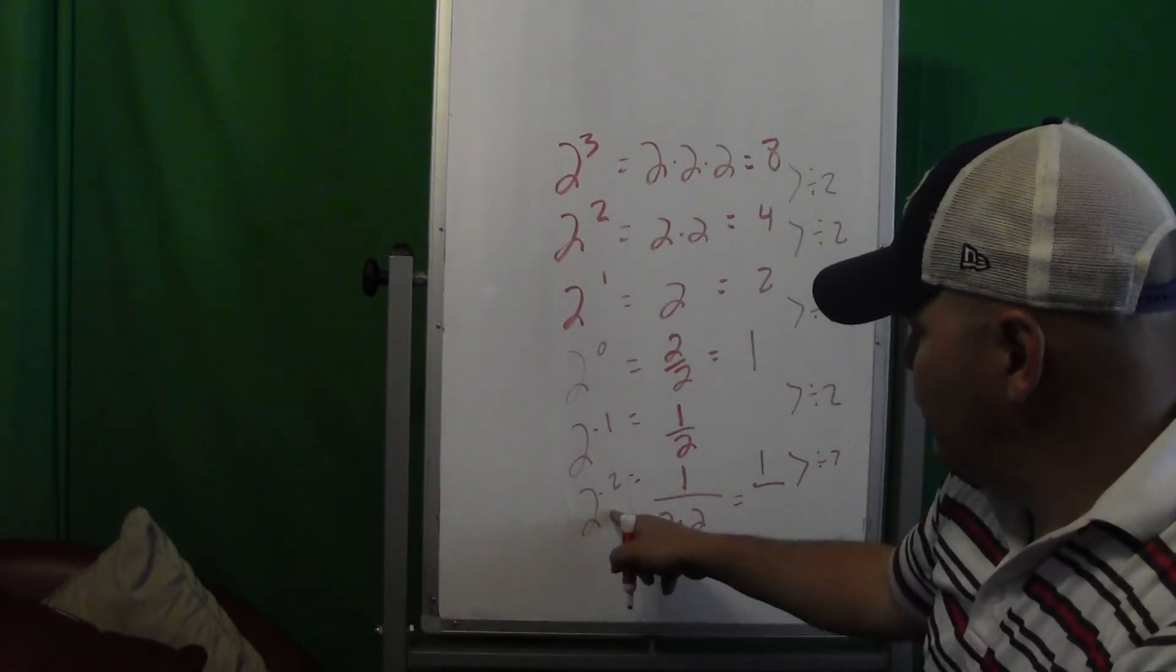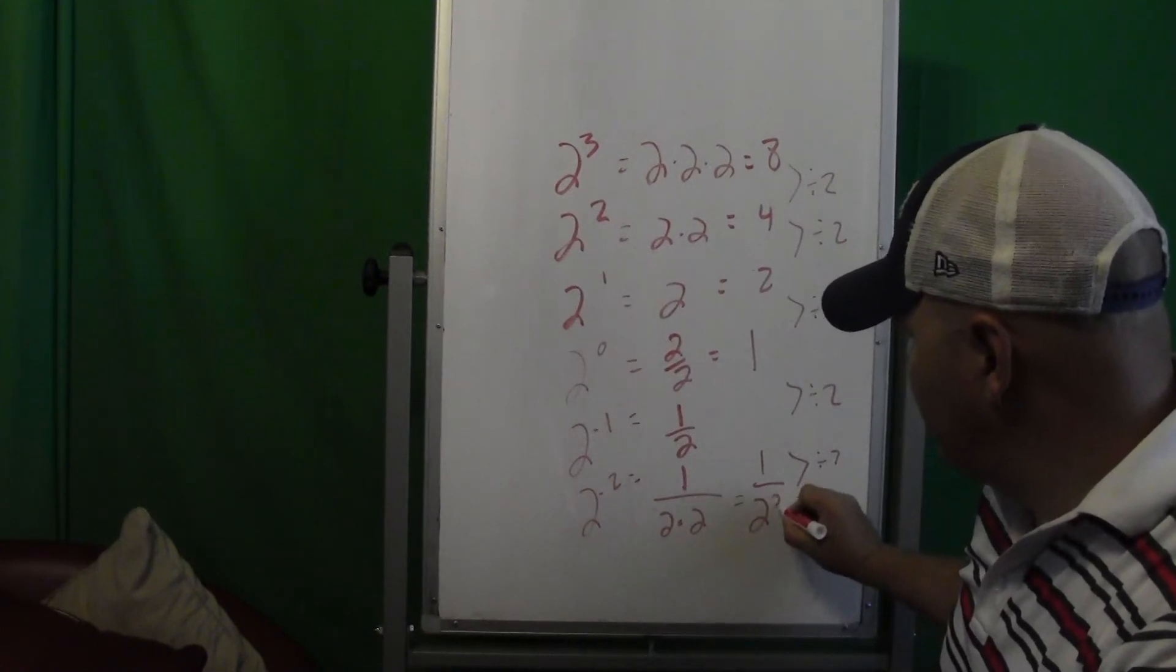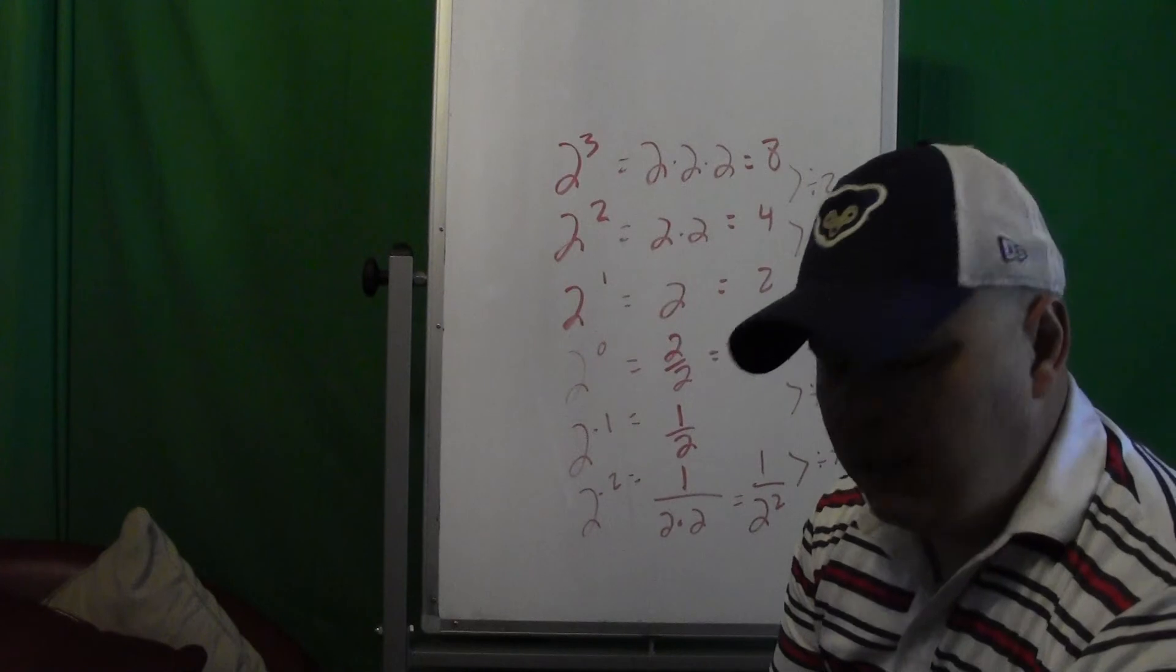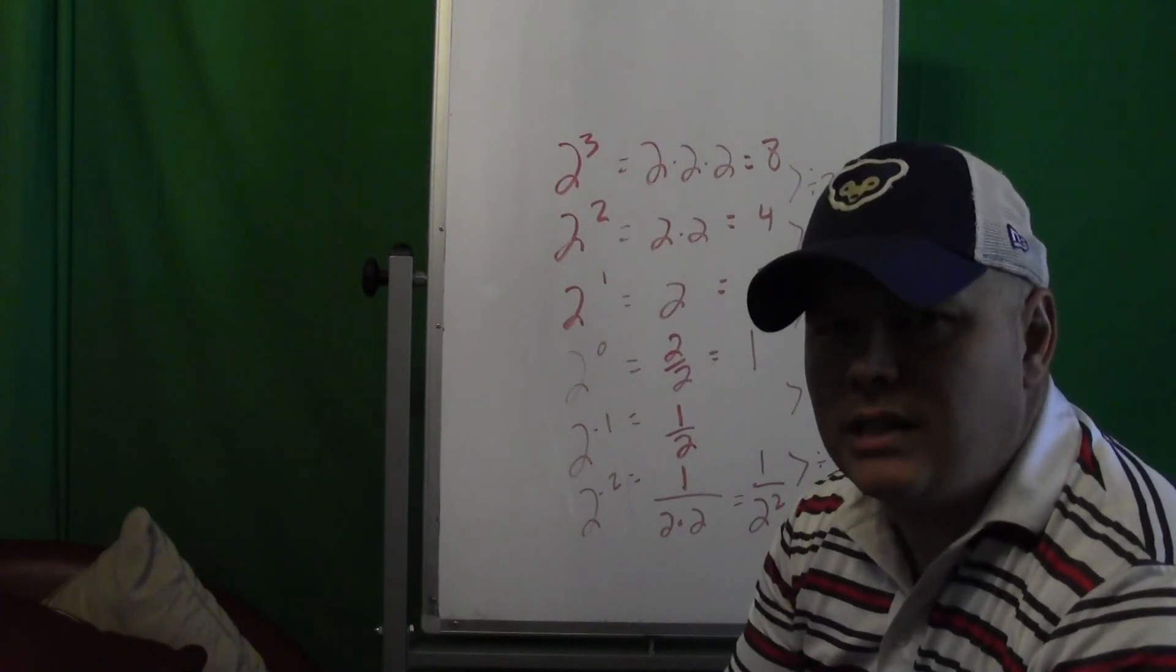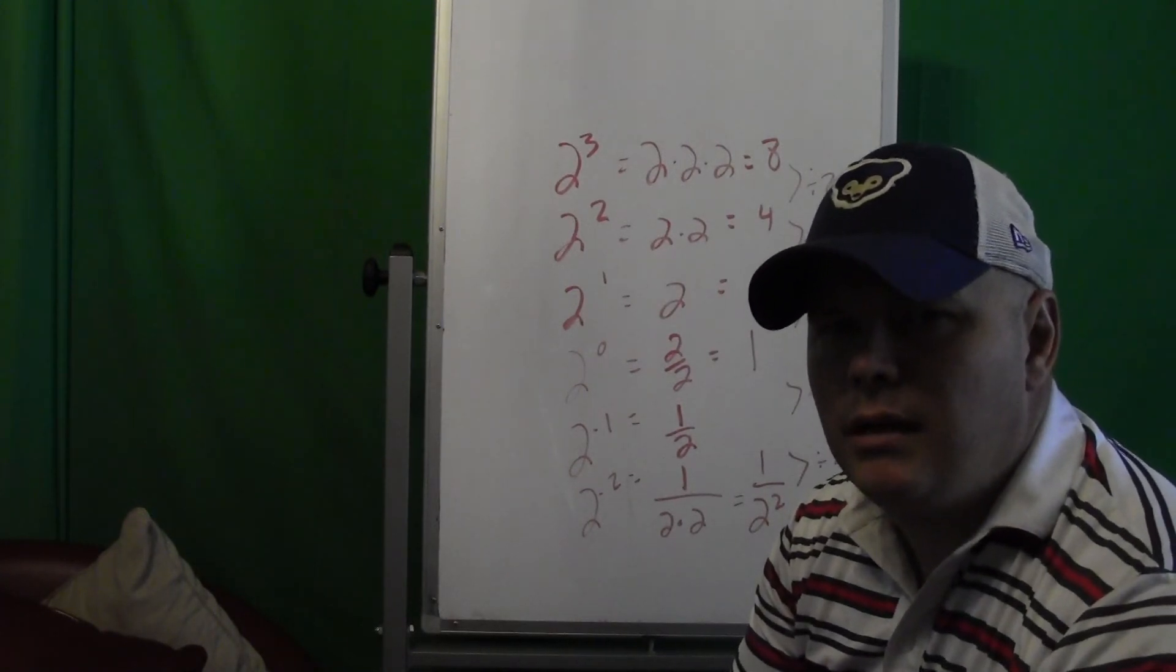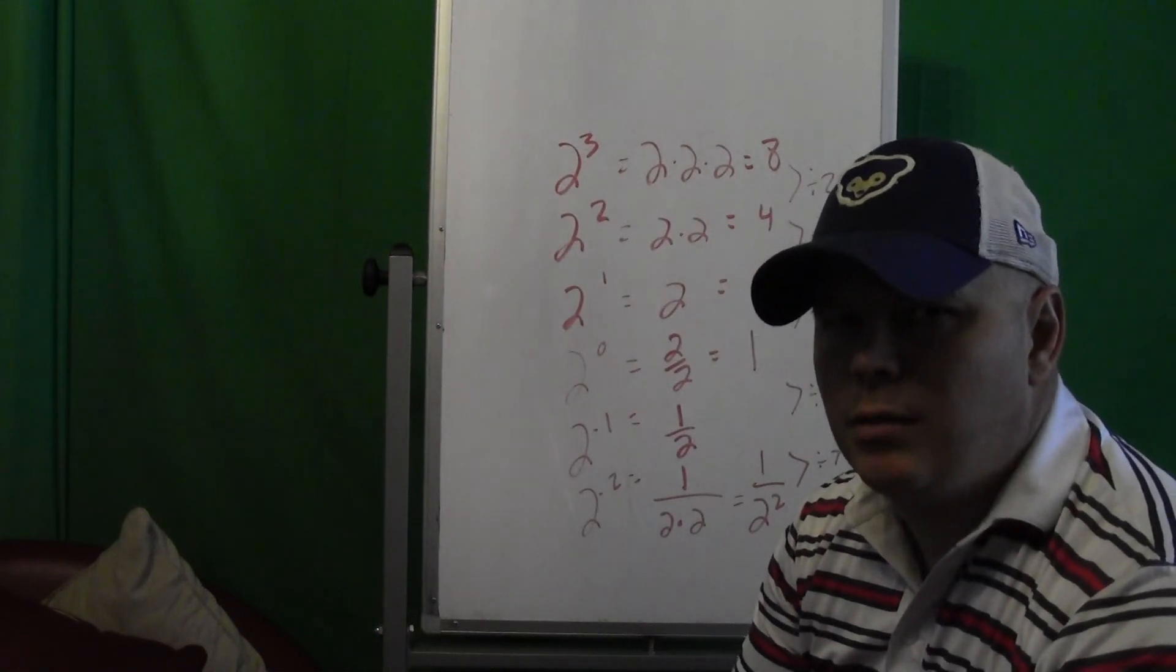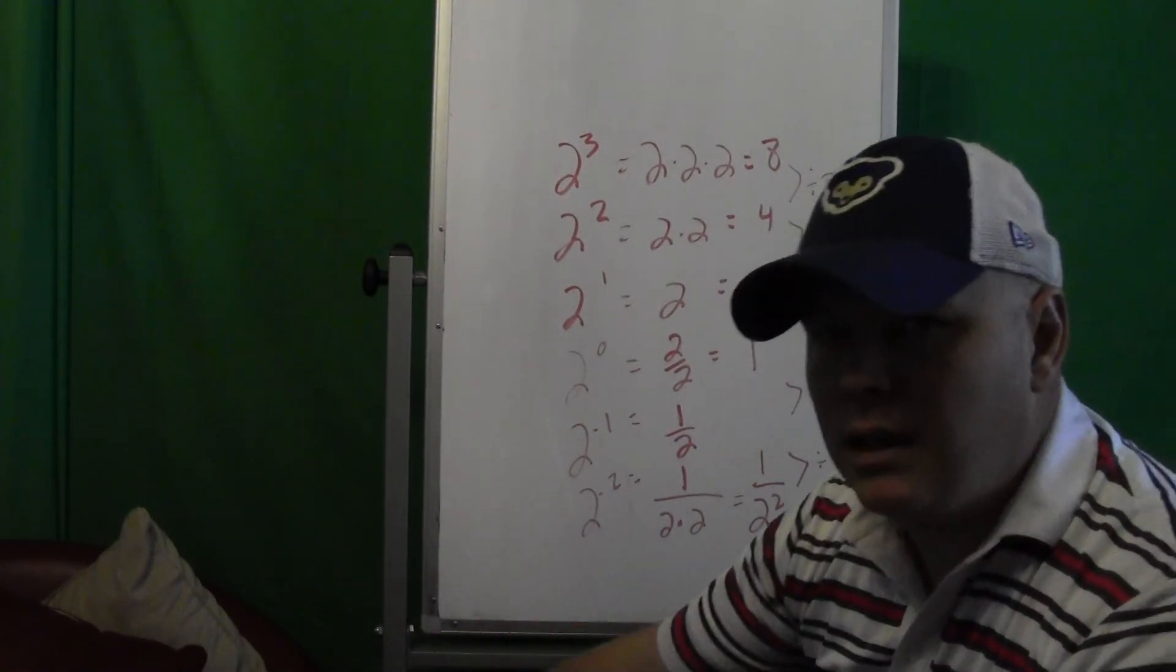So when you have a negative exponent, all I'm really doing is putting whatever my exponent is, turn it into a positive exponent and putting it over 1. So 2 to the square power, we're going to keep talking - I'll ask you to practice a little bit to conceptually see it - but we're going to keep practicing that. So if that seems a little confusing to you today, tomorrow's lesson we're really diving into the negative exponents.